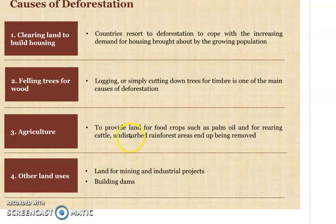The third main reason is agriculture. As the human population is increasing, demand for food is increasing, so people are growing more crops and vegetables, and for that they need more agricultural land. A lot of forests have been cleared on that basis. There are also many other uses like building dams, industrial projects, and mining that are leading to deforestation.